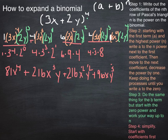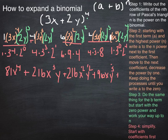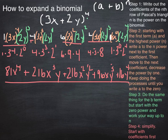And then the last term, we have 1 times 3 to the 0 times 2 to the 4th. So that is plus 16, x to the 0, y to the 4th power. So there would be 3x plus 2y all to the 4th power expanded out.